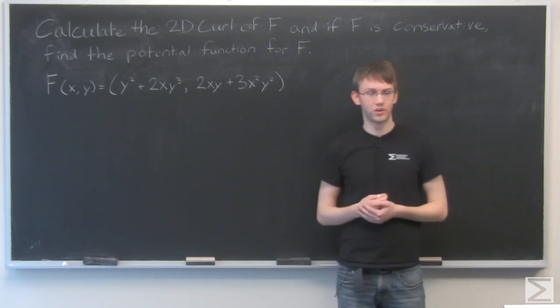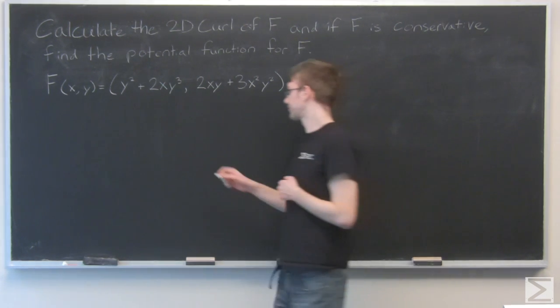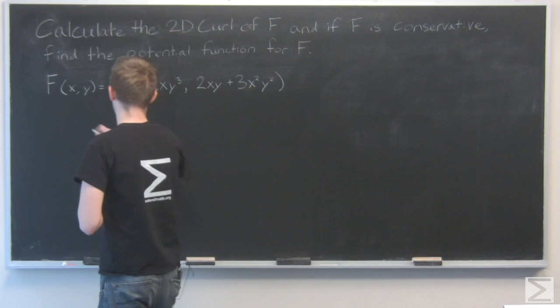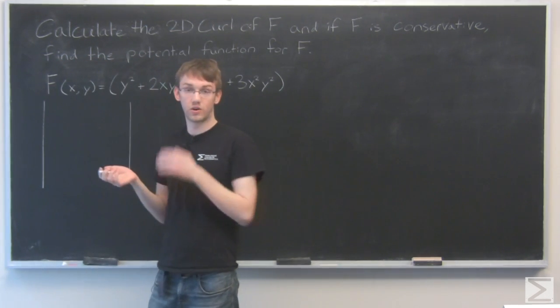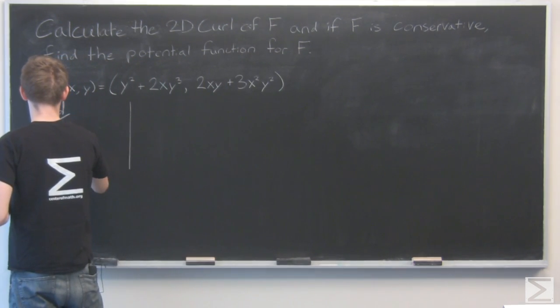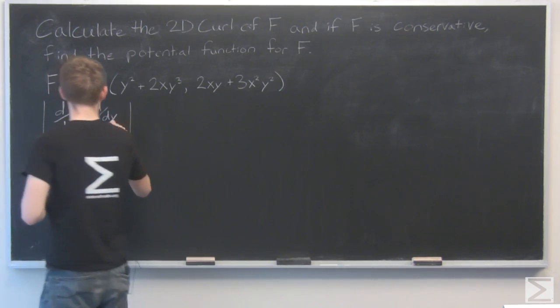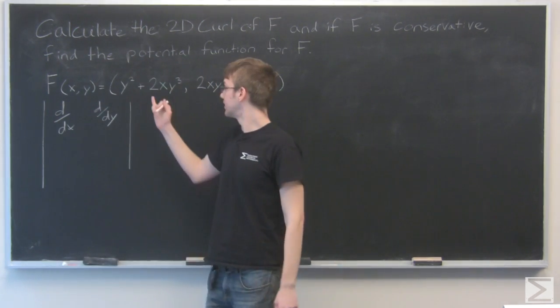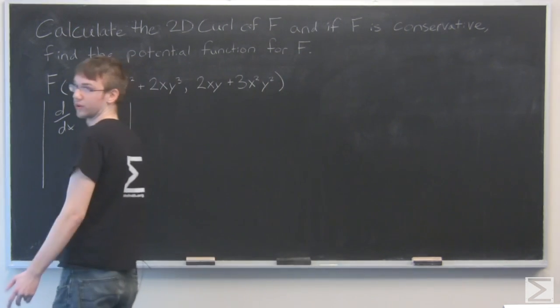All right, so first let's remember what the 2D curl is. It's the determinant of a 2 by 2 matrix where the first row is the partial derivatives d/dx and d/dy. And the second row is my i and j vectors, not components.